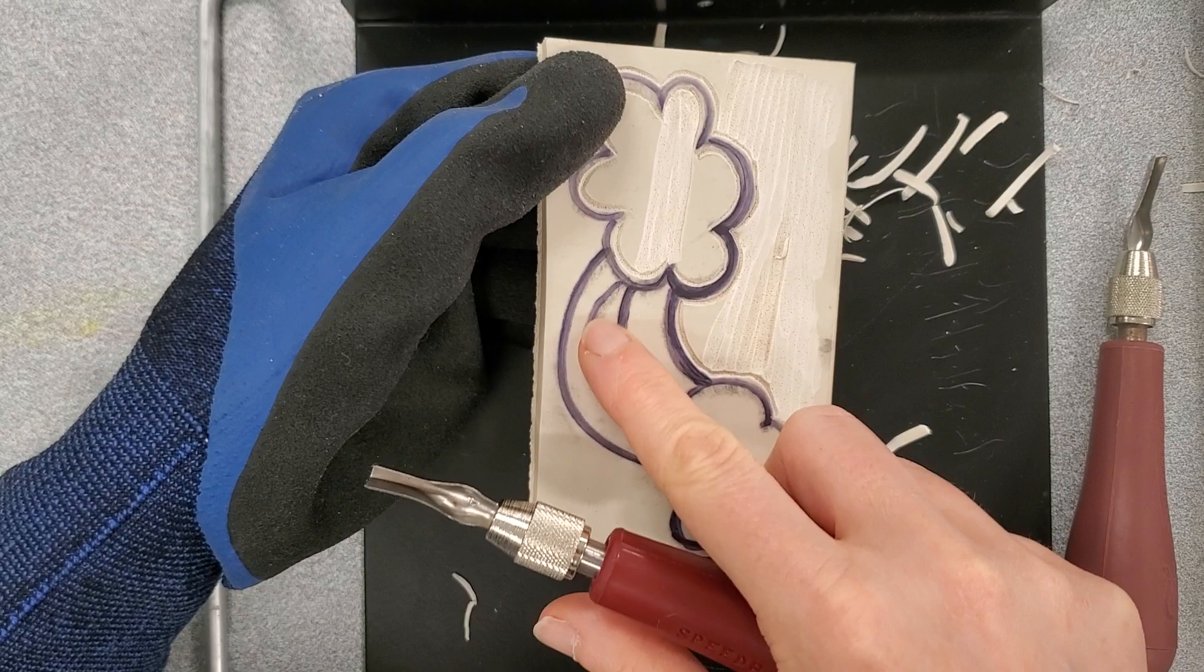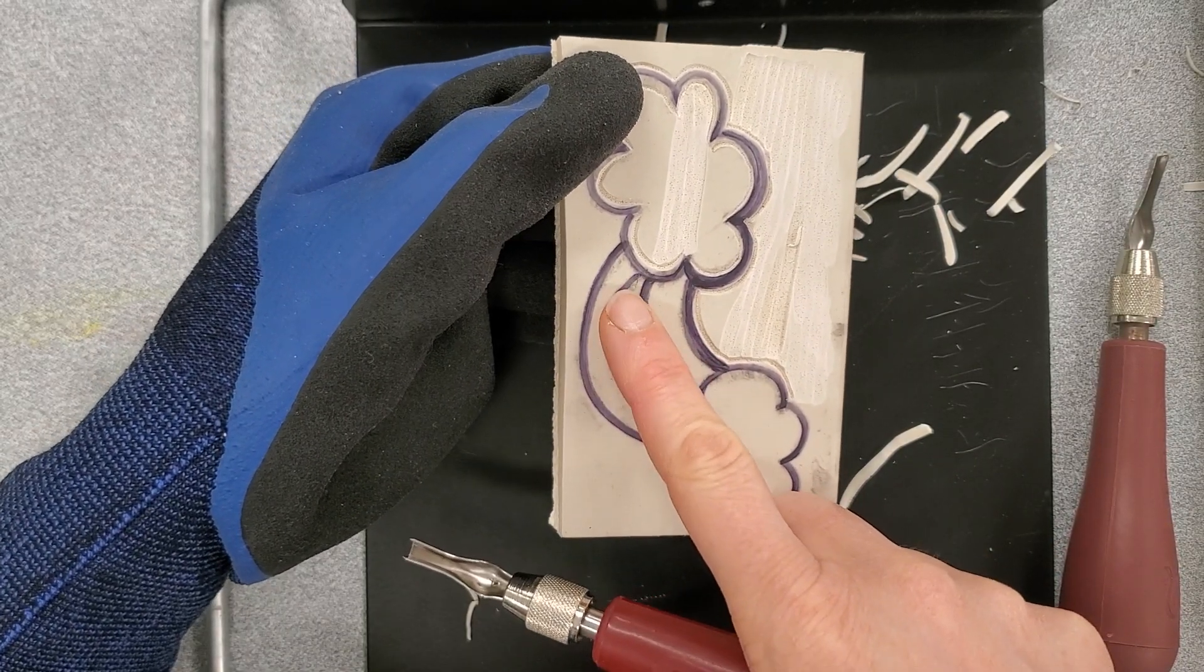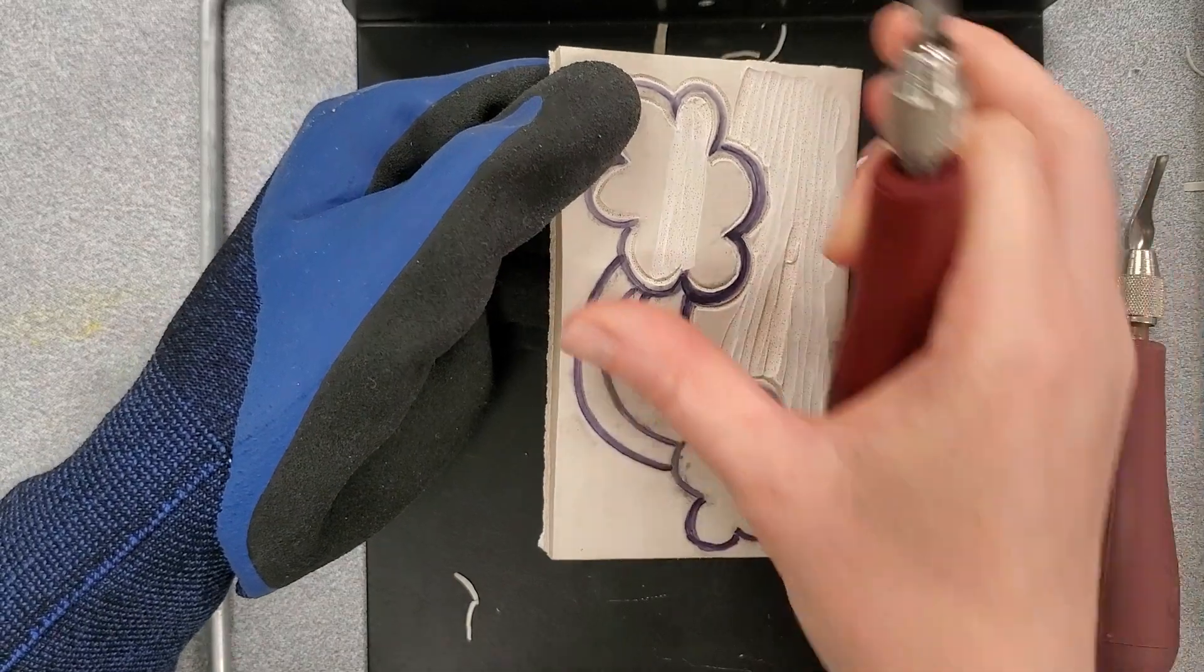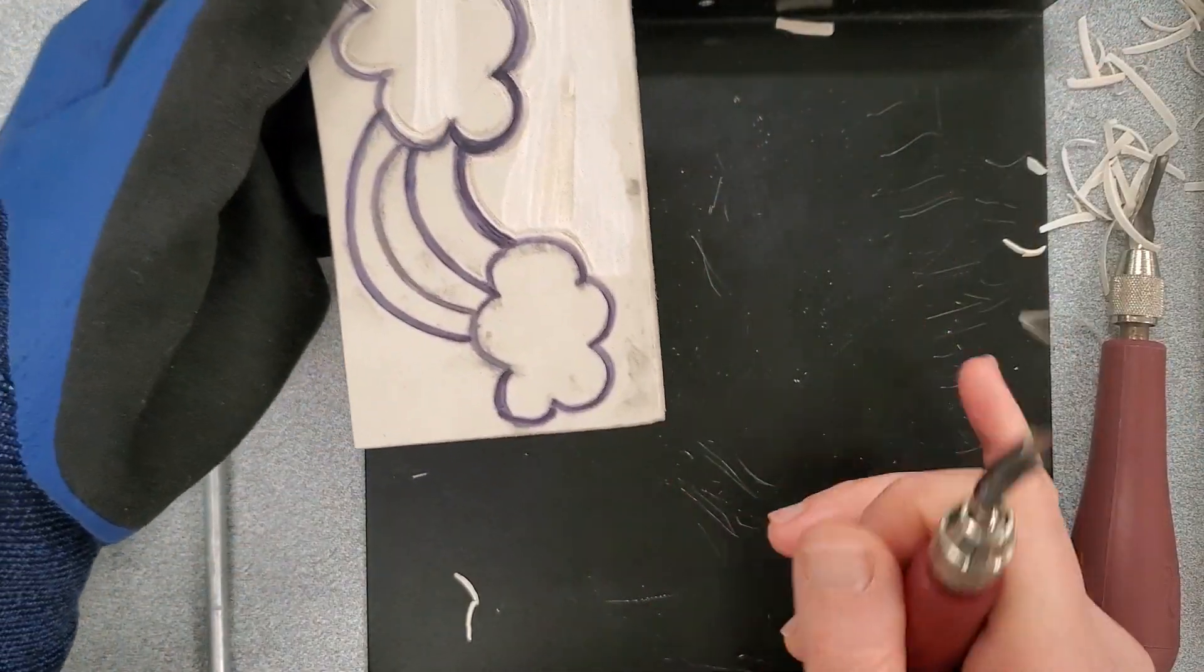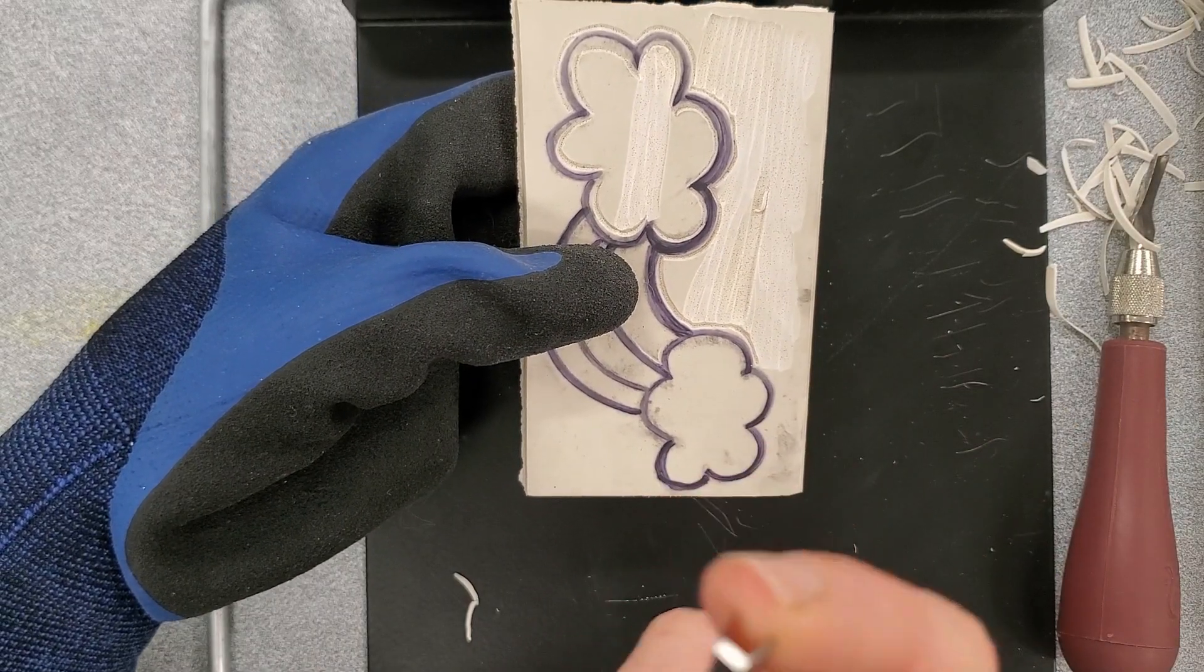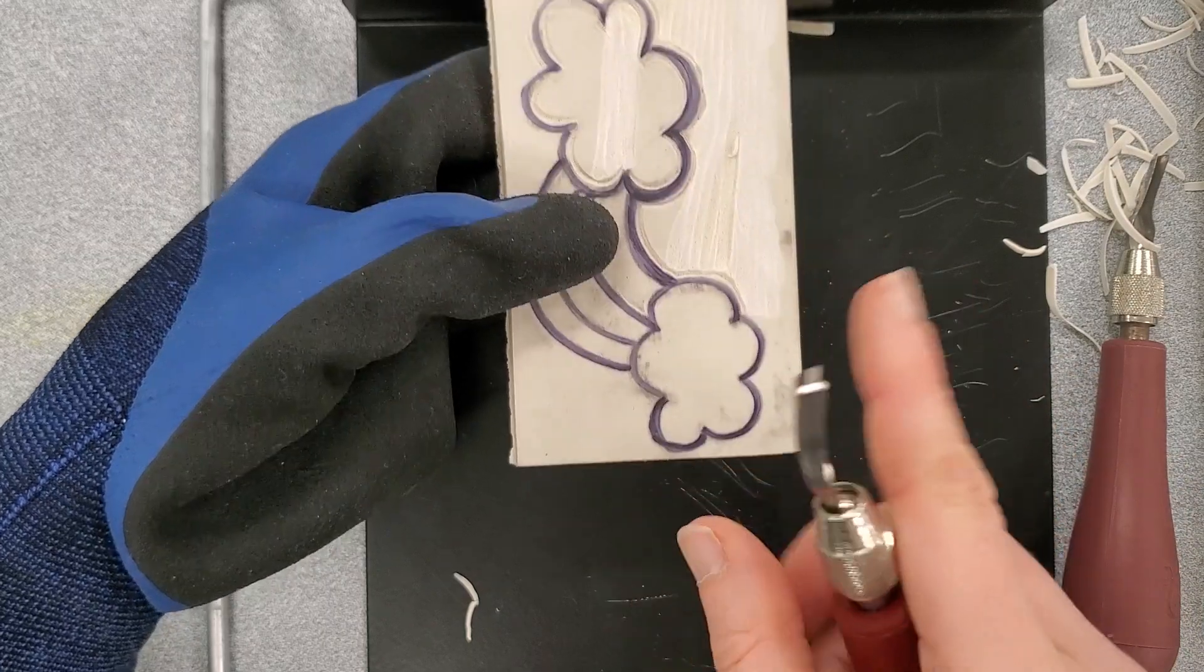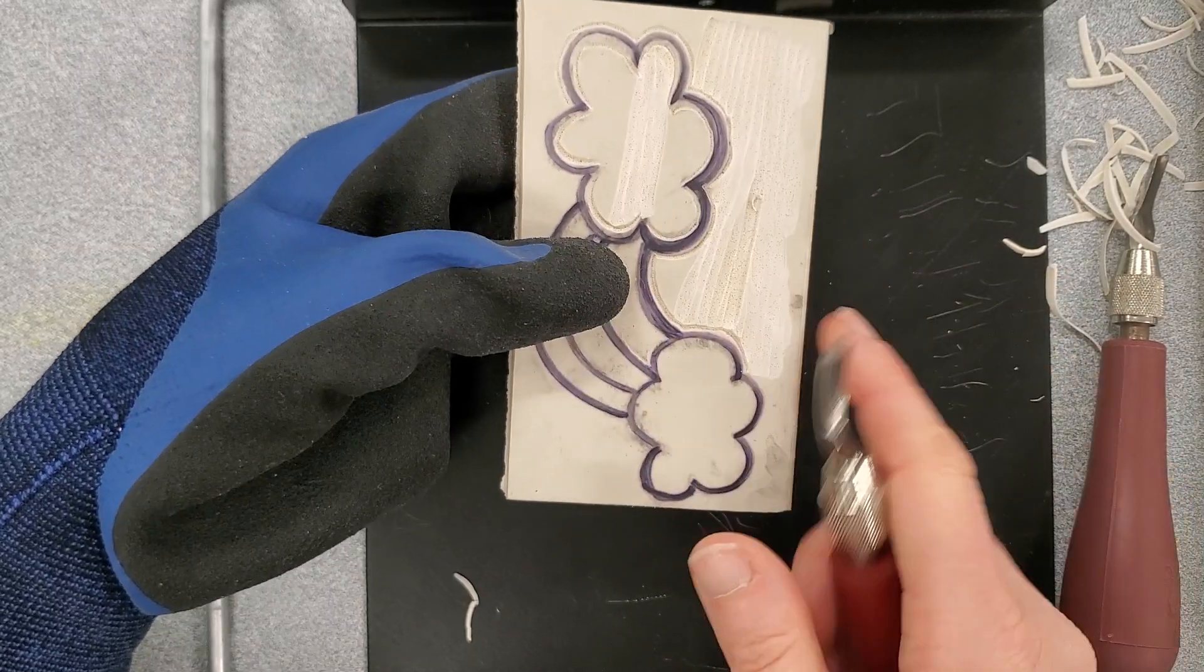If I had a smaller area in here, I could downgrade to a three or even a one tool, depending. So those tools are great for different things. But we want to make sure that you're using the larger tool, particularly like the four tool for larger background areas.